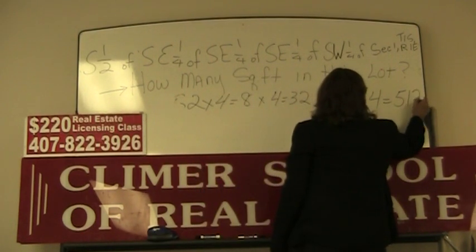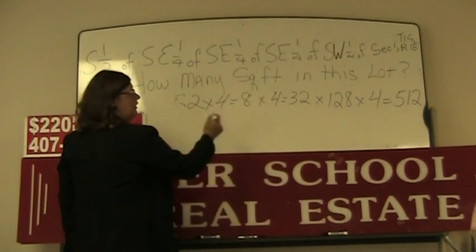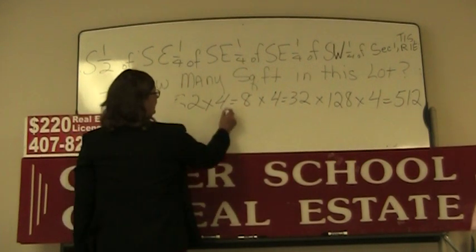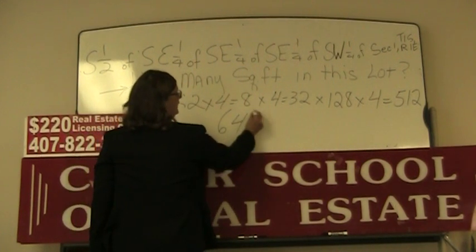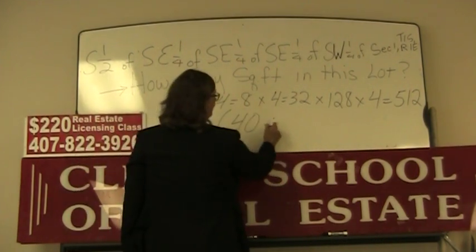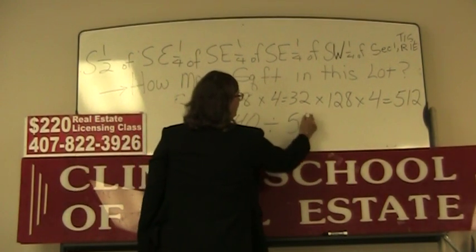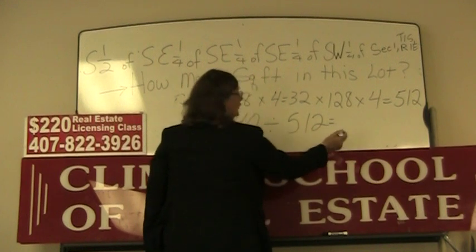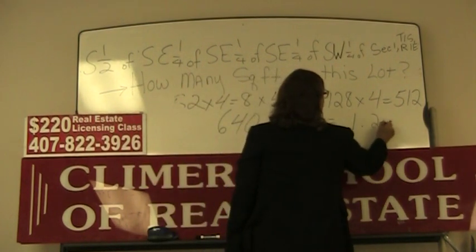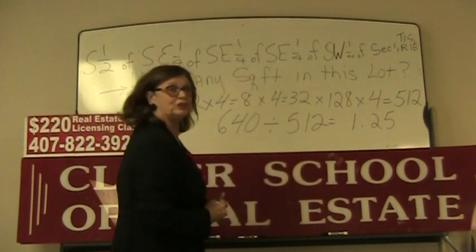Do you remember how many acres there are in a section? There are 640 acres in a section, and if you divide it by the 512 that you get, the correct answer for acres is 1.25. But that's not the question.